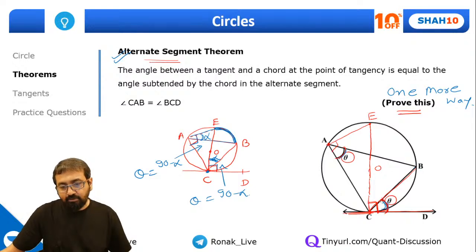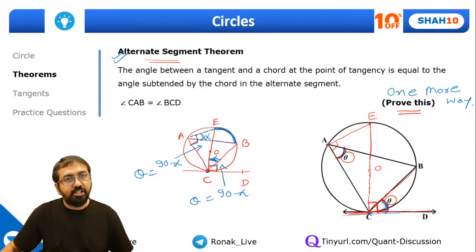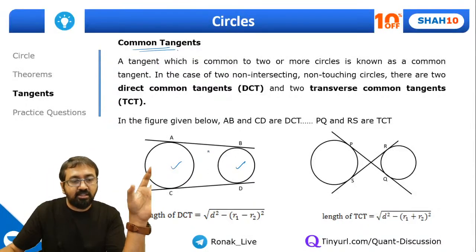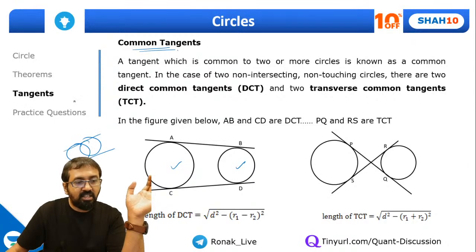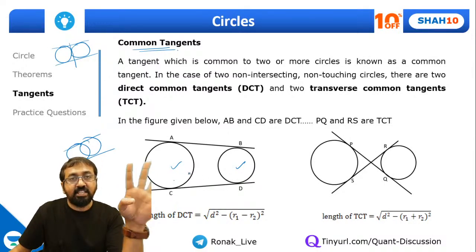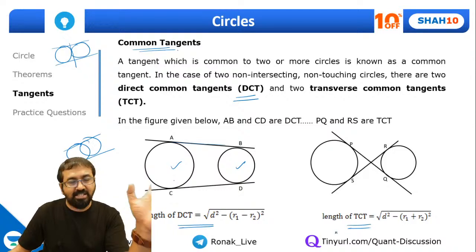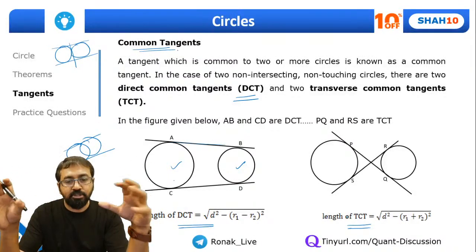Alternate segment theorem summary: if you have one chord and one tangent intersecting at point C, the angle between chord and tangent equals the angle made by that chord at any point on the circumference. Regarding common tangents between two circles: if two circles intersect, there are only 2 common tangents; if they touch each other externally, there are 3; if they are completely disjoint, there are 4 — two direct common tangents (DCT) and two transverse common tangents (TCT).